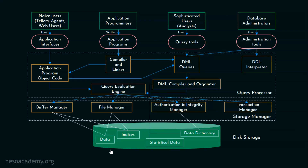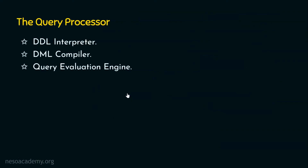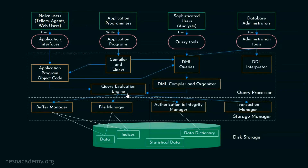In the coming lectures, we are going to have a separate chapter on query evaluation and optimization, where we will see how query evaluation plans are generated, how the query evaluation engine picks the best plan, and how to optimize queries. So we have seen the DDL interpreter, the DML compiler, and the query evaluation engine. I hope you now understand the overall architecture of databases, also referred to as the database system structure. I hope the session was informative. Thank you for watching.